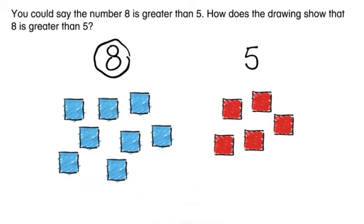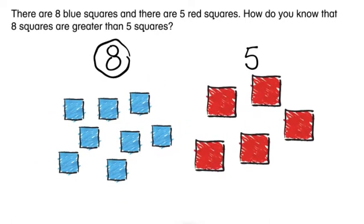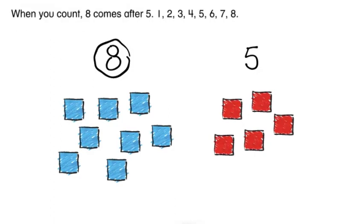How does the drawing show that eight is greater than five? There are eight blue squares and there are five red squares. How do you know that eight squares are greater than five squares? When you count, eight comes after five.